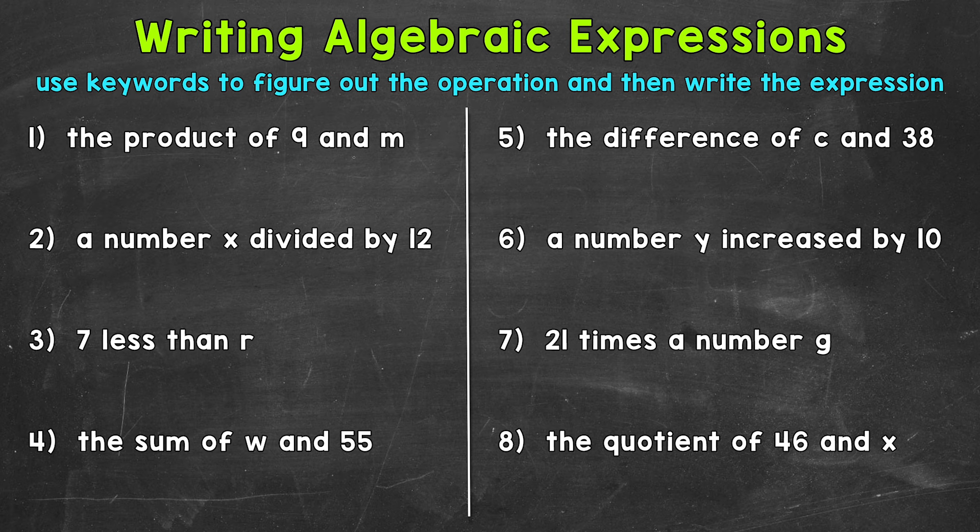So let's jump into our examples and start with number one, where we have the product of nine and M. So product is going to be our keyword. It means the answer to a multiplication problem. So we know this is going to be multiplication, nine times M.